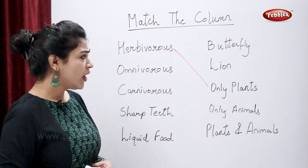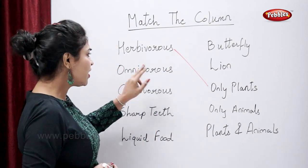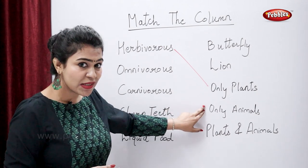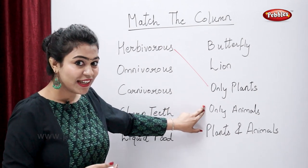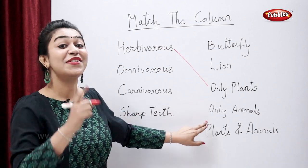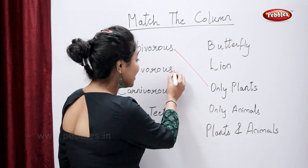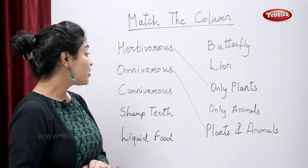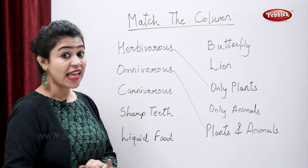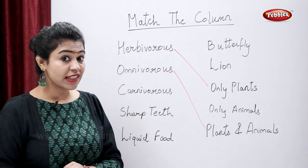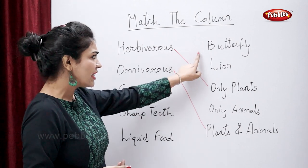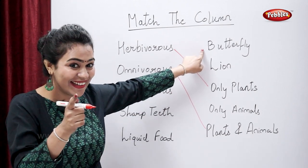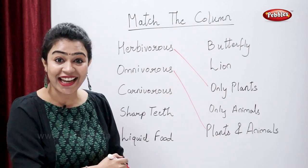Now tell me, what does the omnivorous animal eat? Only animals? No, right — plants and animals. Okay. So now tell me, what does a carnivorous animal eat? Is it butterfly? No, right — it's only animals.